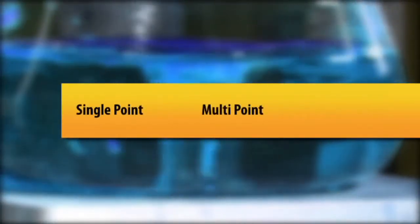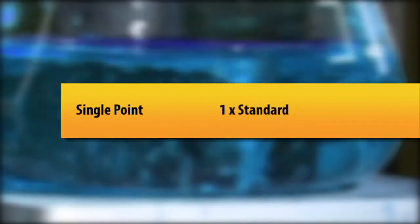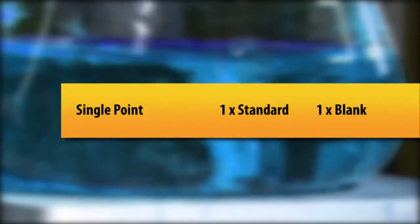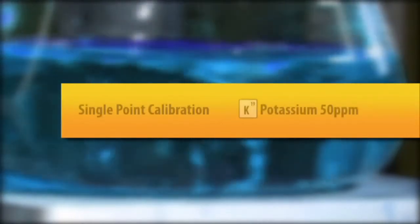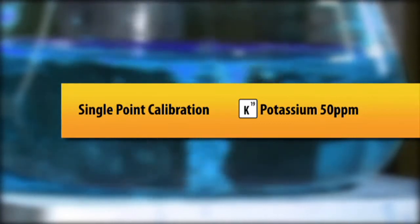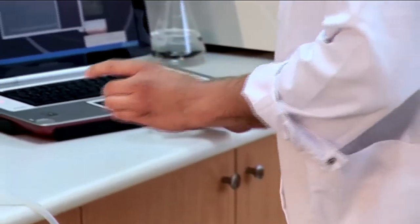There are three types of calibrations we can do: single point, multipoint, and multimode. We will start with the most common type, the single point calibration. The single point calibration involves one standard and a blank to set the zero point. Let's do a single point calibration of potassium at 50 ppm, and while we are calibrating, we can use the FP PC software to follow along.